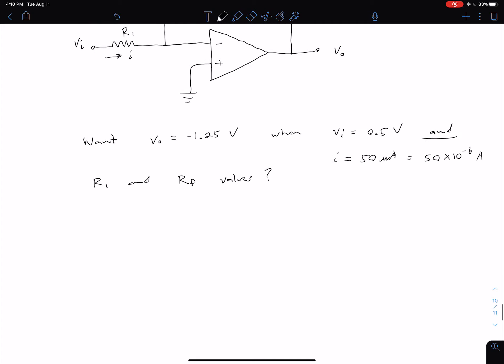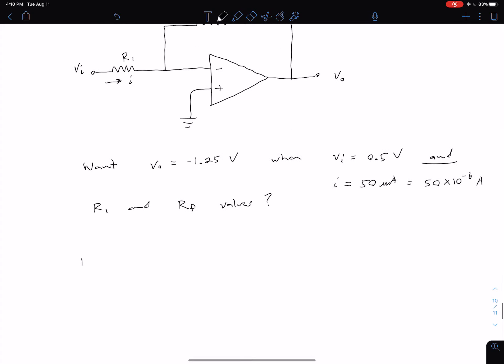So we know for our inverting amplifier in general, we know in general we have AC is equal to negative RF divided by R1.